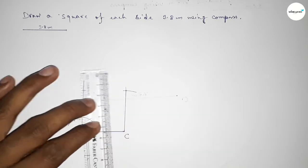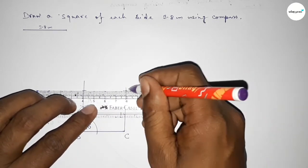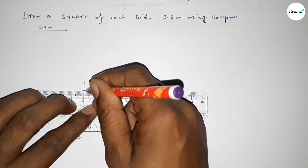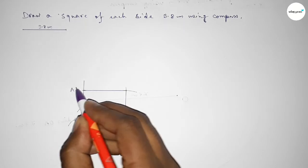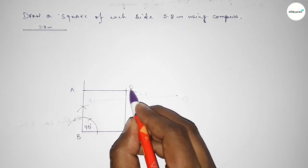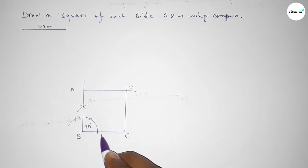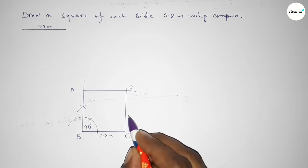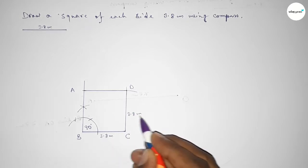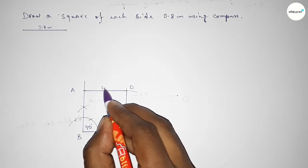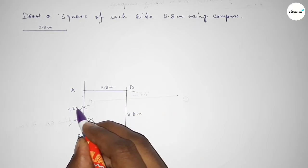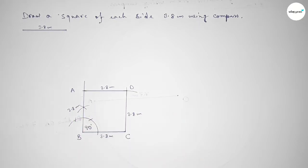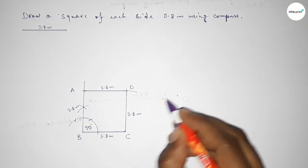Now joining this line, then joining this line, then joining this line to get the square. Taking here point A and here point D — so ABCD. This side 3.8 centimeter, this side 3.8 centimeter, this side 3.8 centimeter, this side 3.8 centimeter, and this side also 3.8 centimeter.